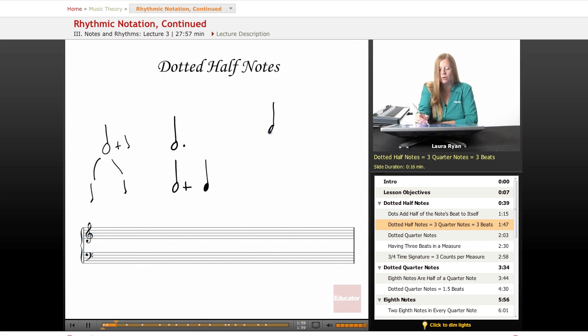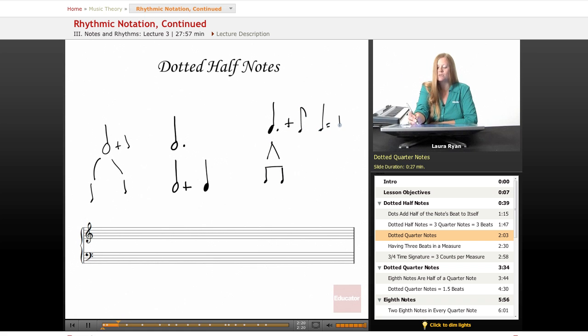Now, if we have a dot next to a quarter note, we'll look at that in a second because there are two eighth notes in a quarter note, that's something we're learning in this lesson. So one of the things you'll be learning today is that there are two eighth notes in one quarter note. So when you put a dot next to a quarter note, you add an eighth note. Let's stick with half note for now. It's a little easier to understand.